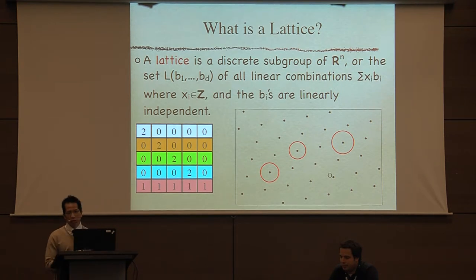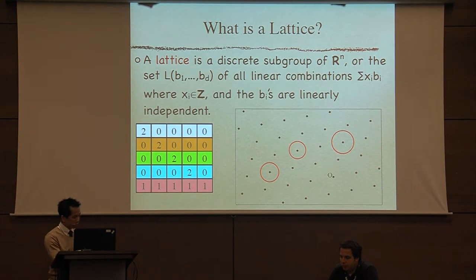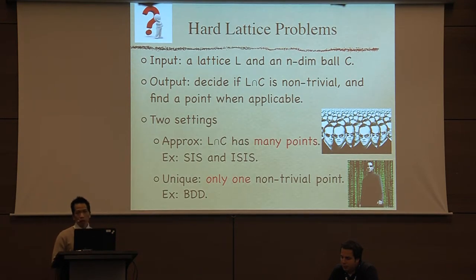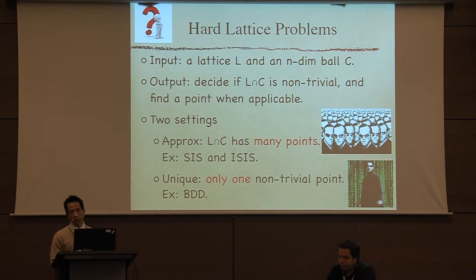A lattice is a discrete subgroup of R^n, which means every point is isolated. Or we can view a lattice as the set of all linear combinations of linearly independent vectors with integer coefficients — typically viewed as a matrix. There are a lot of hard lattice problems; essentially they come down to this generic problem: given a lattice and an n-dimensional ball, decide if their intersection is non-trivial, and if so, find a point.